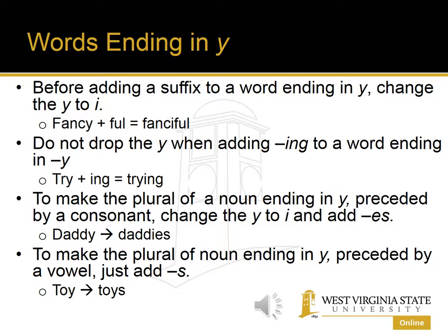Another rule is that we do not drop the Y when adding -ing to a word that ends in Y. For example, try plus -ing becomes trying, T-R-Y-I-N-G. We don't drop any letters, nor do we change any letters. That makes sense because -ing already starts with an I, so we don't want two I's in a row.